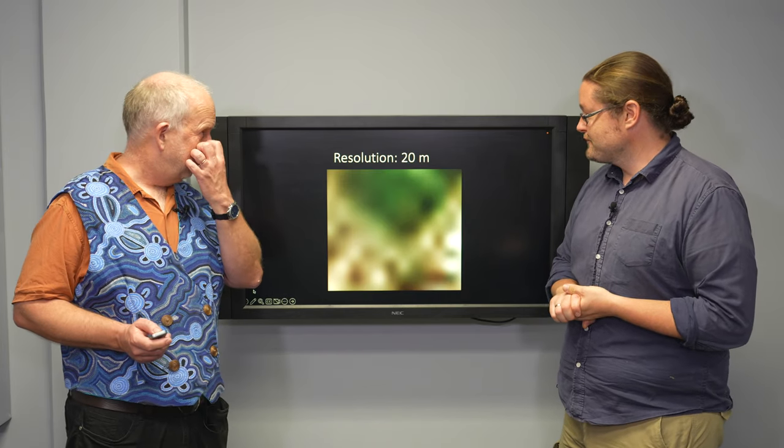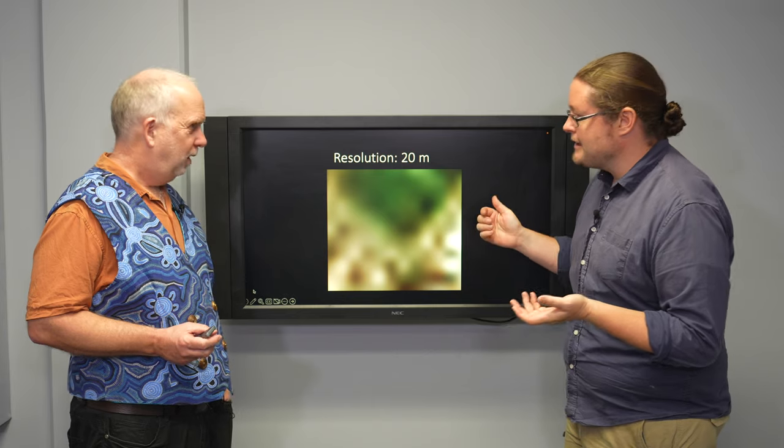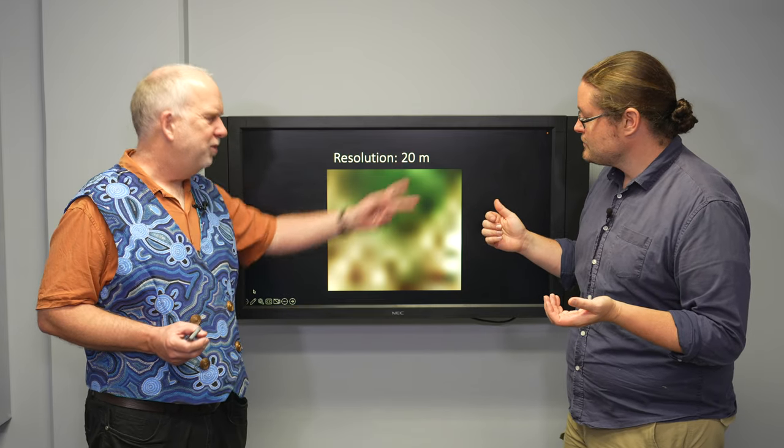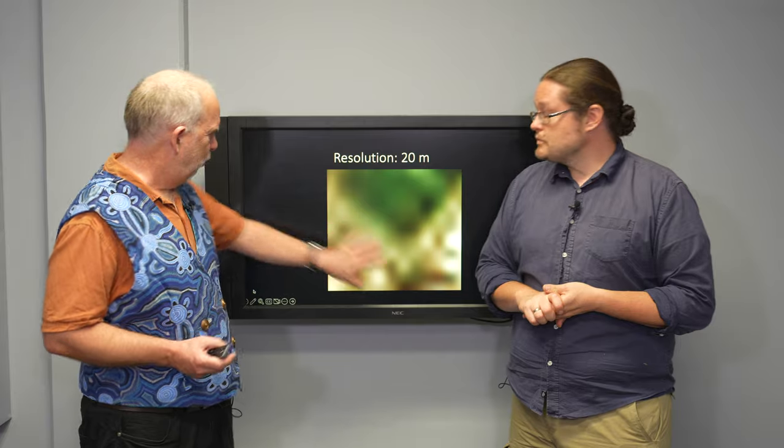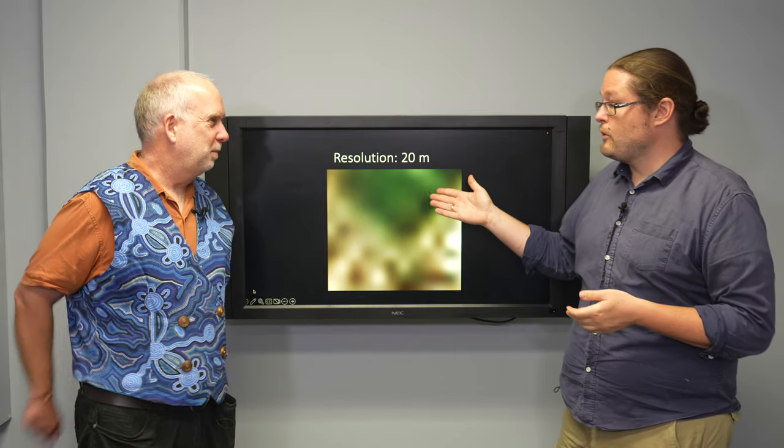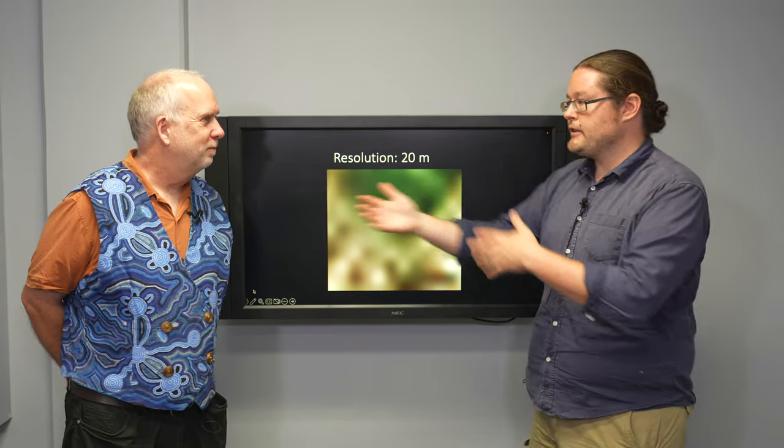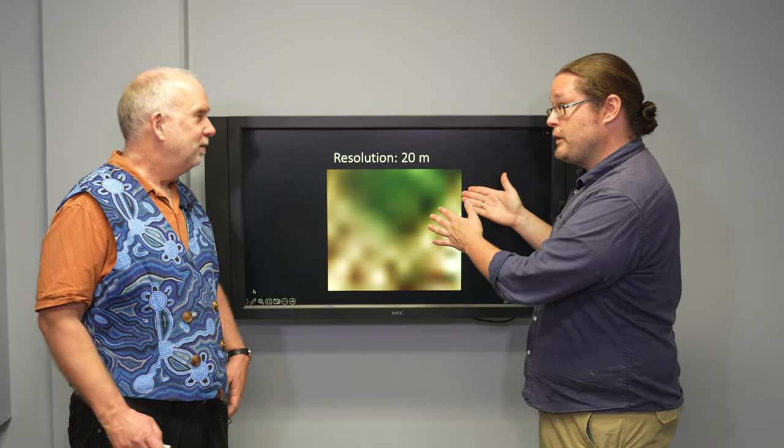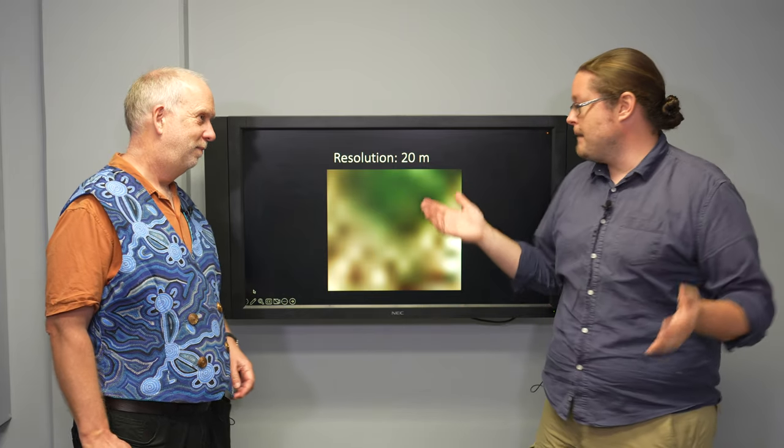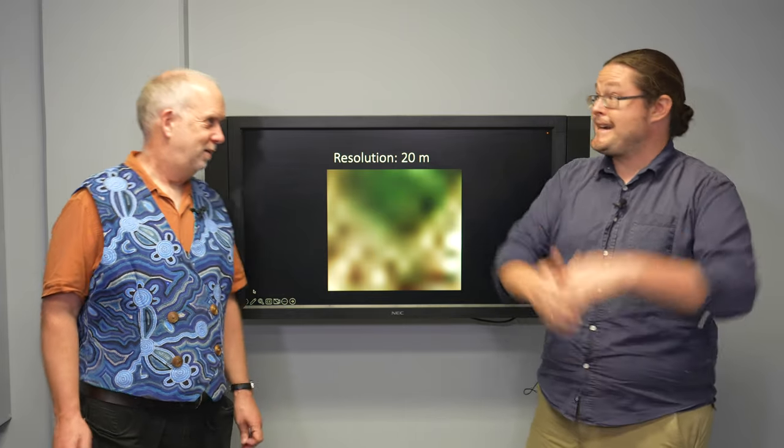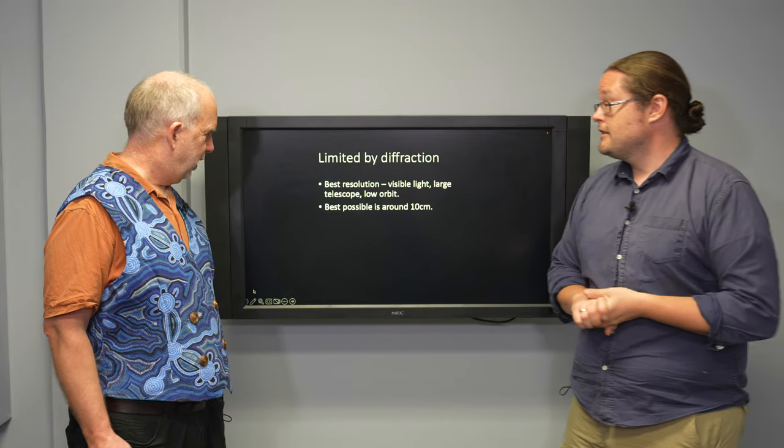And then if you get 20 meter resolution, you can't see anything. Well you can, but you can tell there's a green thing up there. I guess so, you can pick there's a playing field and buildings. And so I guess if you're looking for plants or crops that actually may be perfect for what you need if you want to look at what is happening for plants and crops over an entire state for instance.